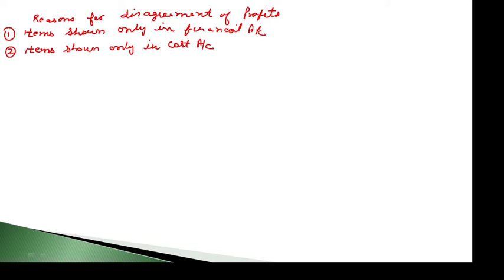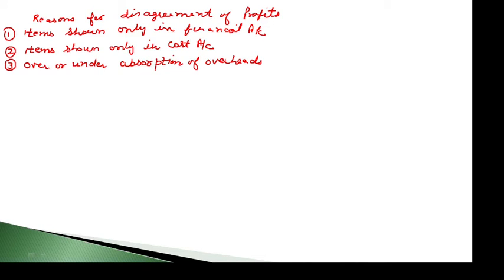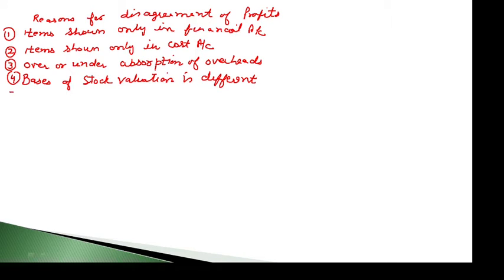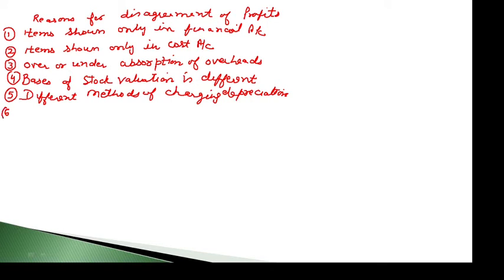Over or under absorption of overhead — whether in financial accounts or cost accounts — if there is over absorption or under absorption of overheads, it will also cause a difference in profits. Different basis of stock valuation, such as FIFO, LIFO, or average stock method, also leads to a difference in profits. Different methods of charging depreciation, and abnormal gains or losses, are also reasons why the profits of cost accounts and financial accounts disagree.